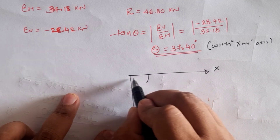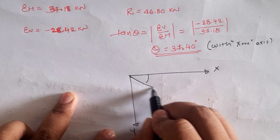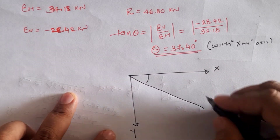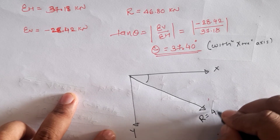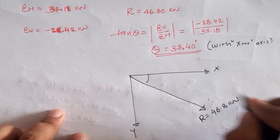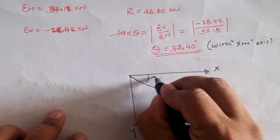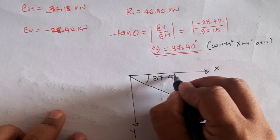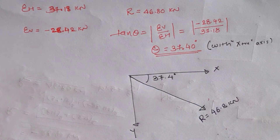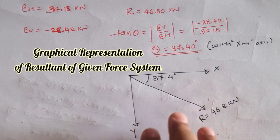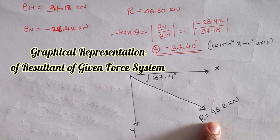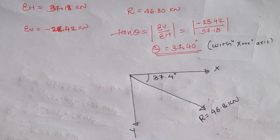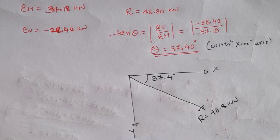The resultant makes an angle of 37.40 degrees with the positive x-axis. We plot it with R = 46.80 kilonewtons and θ = 37.40 degrees below the horizontal. This is the graphical representation of the resultant of the given four-force system. Thank you.